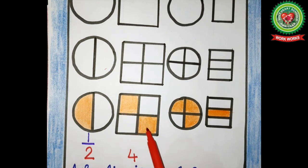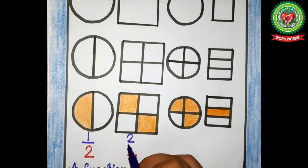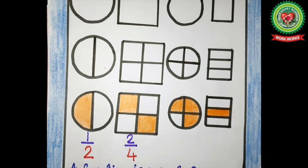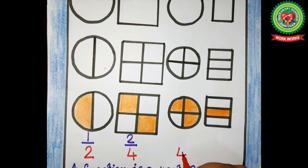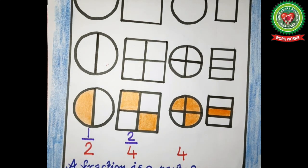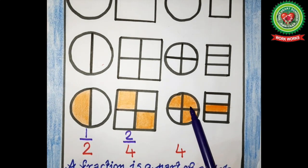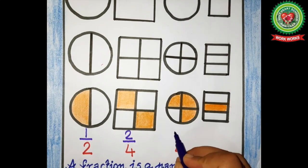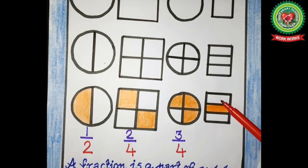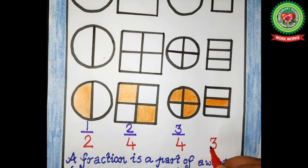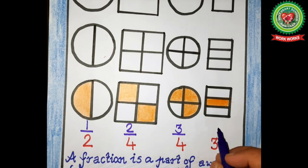Now let's move to the next figure. How many total parts are there? One, two, three, and four — total parts are four. How many parts are shaded? One, two, and three — three parts are shaded. Now the next figure: how many total parts are there? One, two, and three — total parts are three. How many parts are shaded? One part is shaded.